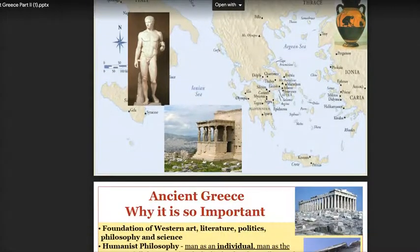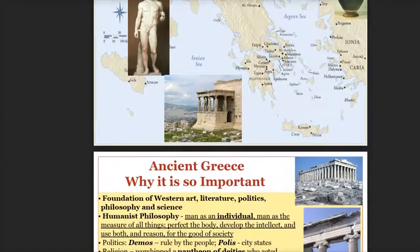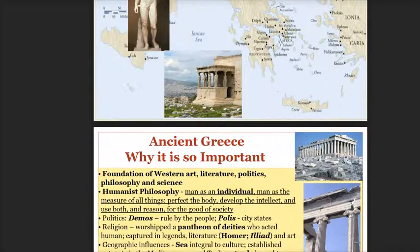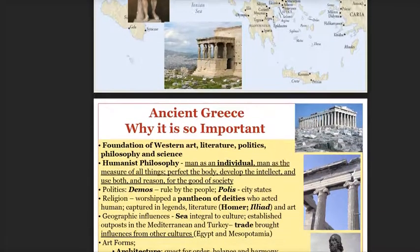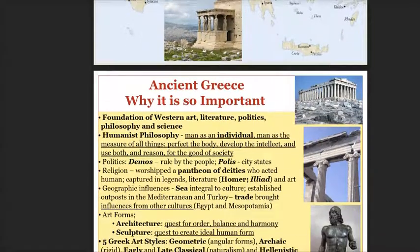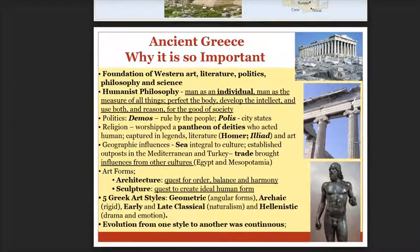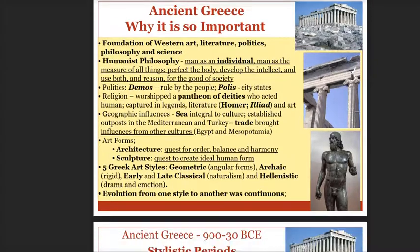So why is the art of ancient Greece so important? Well, for all the foundation of Western art, literature, politics, philosophy and science, the ancient Greek culture had a very strong influence on how we structure our society, how we build architecture, how we do sculpture. So there's a lot of strong influence from the Greeks.